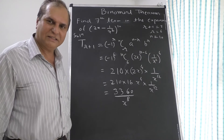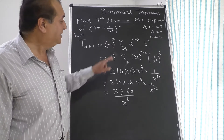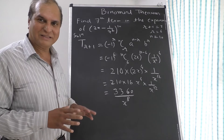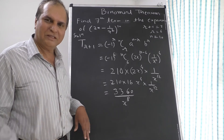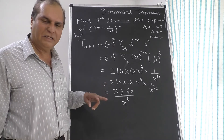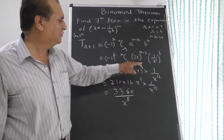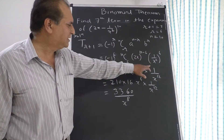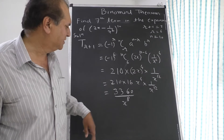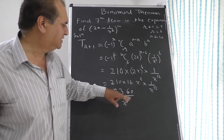You know how to find 10C6 from the permutation and combination chapter. 10C6 equals 10C4, which is 10 × 9 × 8 × 7 upon 4 × 3 × 2 × 1, giving 210. So we have 210 times (2x)^4 times (1/x²)^6, which is 1/x^12. Now (2x)^4 gives 2^4 = 16, so we get x^4. Then 210 times 16 equals 3360.